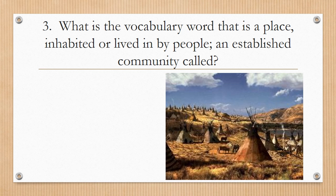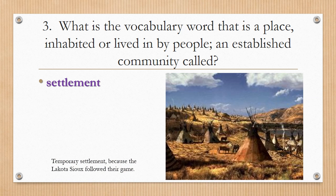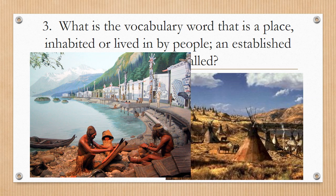Number three: What is the vocabulary word for a place inhabited or lived in by people — an established community? A settlement. The settlement on the Great Plains would be a temporary settlement because the Lakota Sioux followed their game, primarily the buffalo. Here is a settlement, but it's a more permanent settlement of the Kwakiutl because they're not moving anytime soon. You can tell by their structures and living environment that this settlement is permanent.